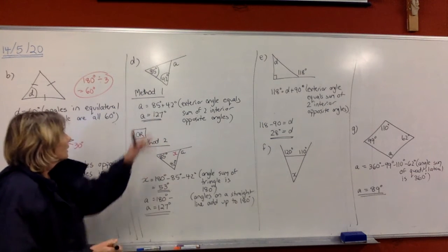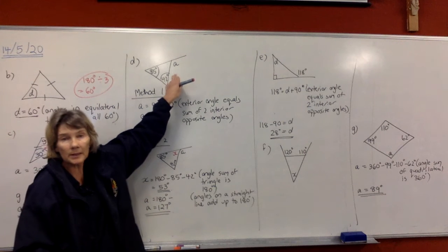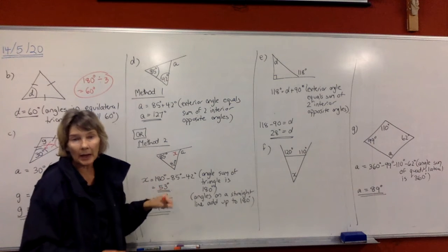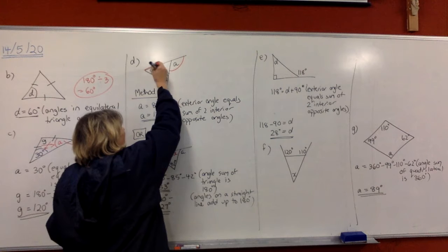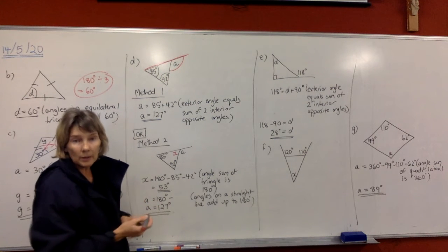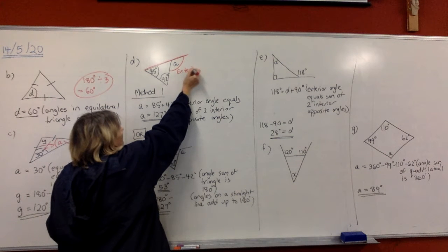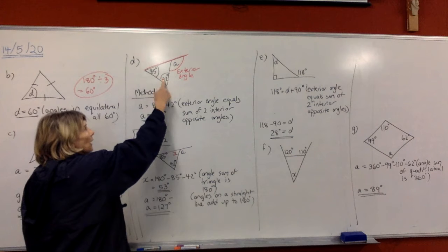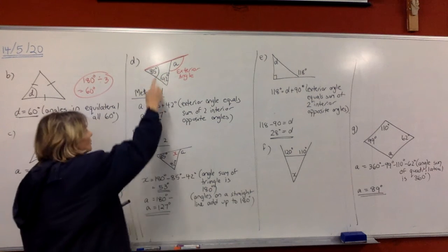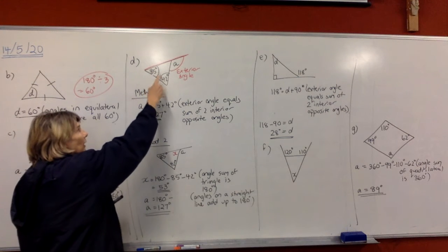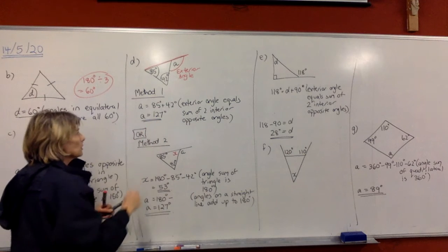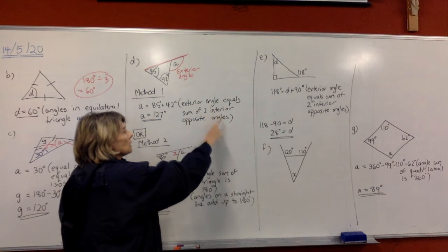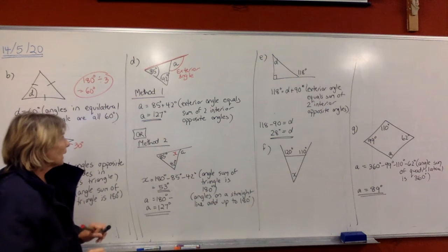In this next question we're looking for A. There's a quick way and a slower way. If you're good with the exterior angle rule, that's the quick way — Method 1. A side of the triangle has been extended, creating an angle outside the triangle — that's our exterior angle. The rule tells us it equals the sum of the two interior opposite angles, so A equals 85 plus 42, which gives 127 degrees. Write the full rule: exterior angle equals sum of two interior opposite angles.